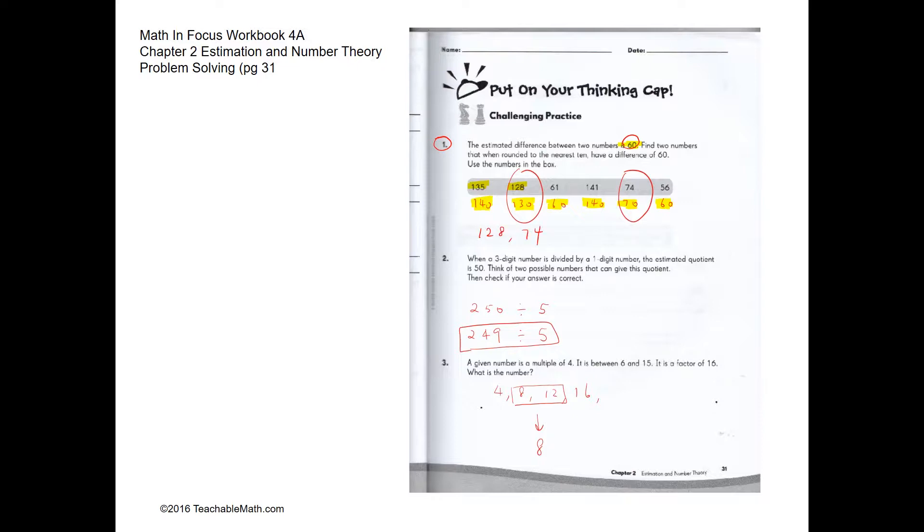Next, question 2. When a three-digit number is divided by a one-digit number, the estimated quotient is 50. We can use 249 divided by 5 because when you round to the nearest 10, it will give us 250 divided by 5, which is 50.